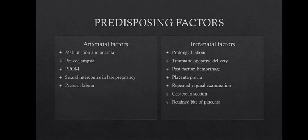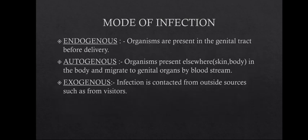There are three modes of infection: endogenous, autogenous, and exogenous. In endogenous, the organism is already present in the genital tract before delivery. In autogenous, the organism is present elsewhere in the body — such as the skin — but at the time of delivery it gains access to the bloodstream and migrates to the genital organs causing infection. In exogenous, infection is caused from outside sources, such as visitors who are not following proper aseptic techniques, causing cross-infection.